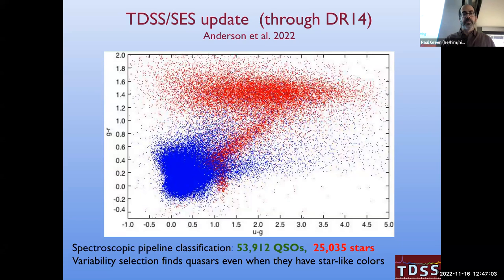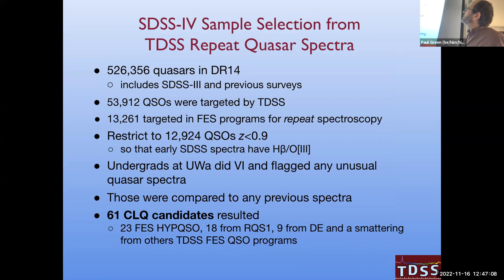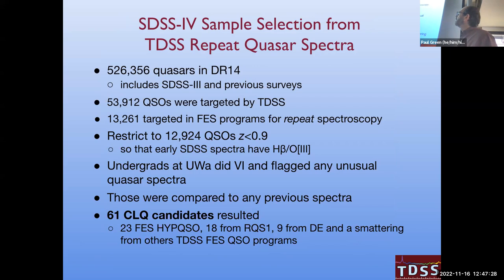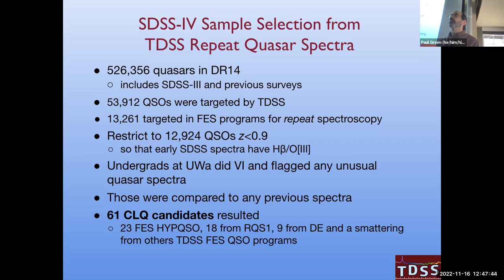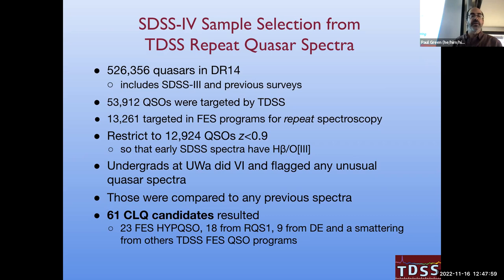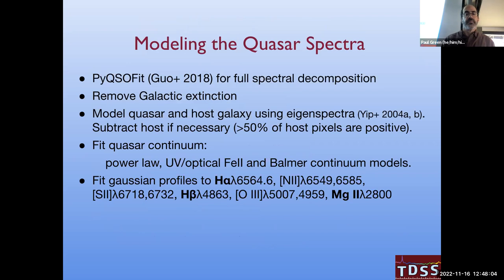About 13,000 objects in our sample of 54,000 were repeat spectroscopy by design, restricted to redshift less than 0.9 to observe H-beta and O III. A small army of undergraduates at the University of Washington did visual inspection on all those spectra, picking out anything unusual and comparing to previous spectra. With a minimum of two spectra per quasar, we picked 61 changing-look quasar candidates, then settled on a criterion of at least 3-sigma change in broad H-beta emission.